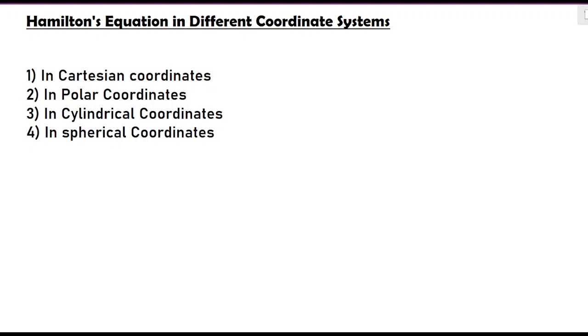Hello everyone. After discussing Hamilton's equations of motion, we are now going to discuss Hamilton's equations in different coordinate systems. As you know, we have four types of coordinate systems: Cartesian, polar, cylindrical, and spherical. We will deal with all of them separately in different videos. For this first video, we will deal with Hamilton's equation in the Cartesian coordinate system. The topic of today's discussion is Hamilton's differential equation in Cartesian coordinates.